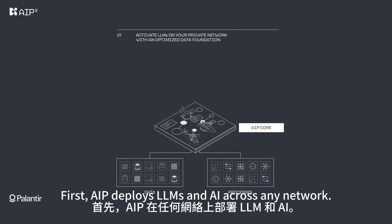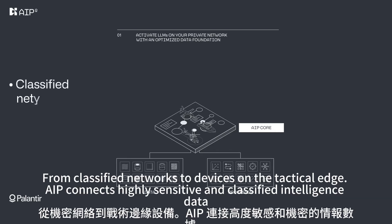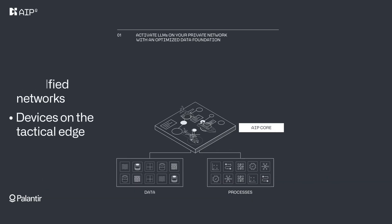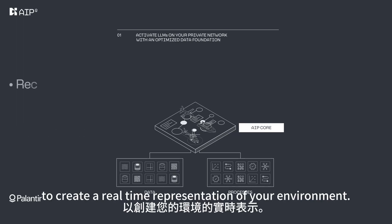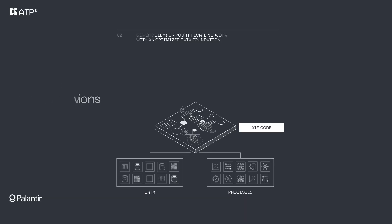First, AIP deploys LLMs and AI across any network, from classified networks to devices on the tactical edge. AIP connects highly sensitive and classified intelligence data to create a real-time representation of your environment.